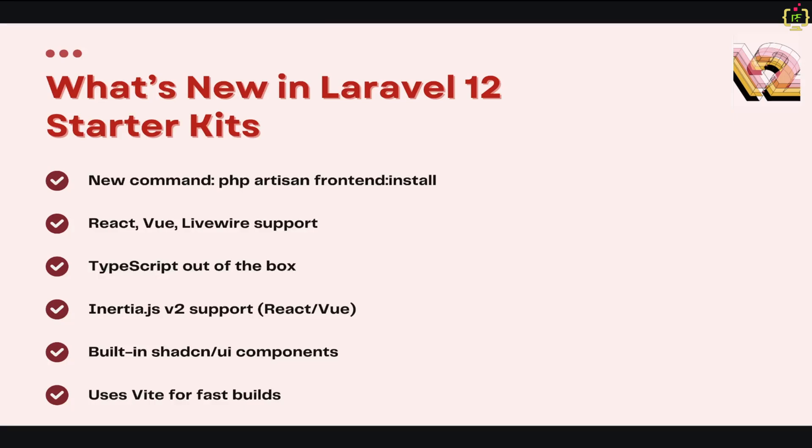All kits now include TypeScript support and use Vite for front-end building, which gives you blazing fast development builds. They also come with shadcn UI — a beautiful, modern UI library based on Tailwind CSS — and the components are fully customizable and production-ready. For React and Vue, Laravel now integrates Inertia.js version 2, which gives you a full single-page application experience while still using Laravel routing and controllers. In short, it has never been easier or faster to set up a Laravel project with a front-end of your choice.